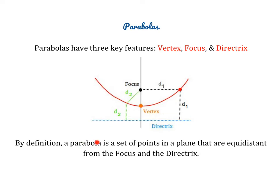By definition, a parabola is a set of points in a plane that are equidistant from the focus and the directrix. If you take any point on your parabola — let's say this point where the green lines intersect — the distance from that point to the directrix is the same as the distance from that point to the focus. Or if you take another point, this distance is exactly the same as this distance. That's the geometric definition of a parabola.